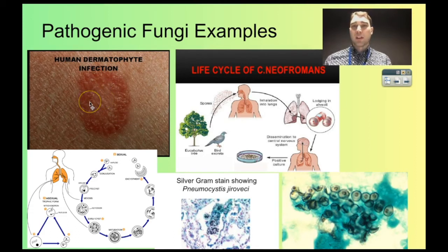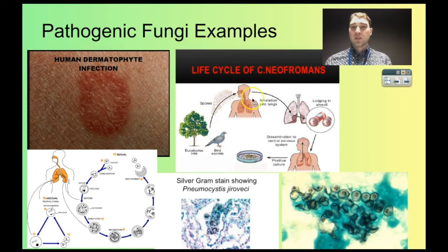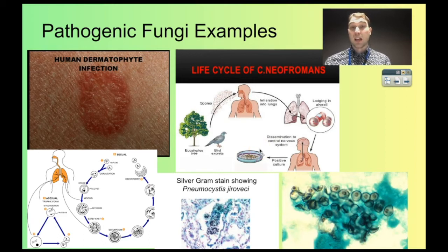These are quite common and reasonably easily treatable. This picture shows the life cycle of a fungus called Cryptococcus neoformans. The spores can be emitted from trees, but normally from the excretions of birds like pigeons, where the fungus likes to grow. The spores are inhaled and go deep inside the lungs, causing damage. This isn't common in people whose immune systems are working fine, but for people with HIV infections and AIDS it can be quite deadly.